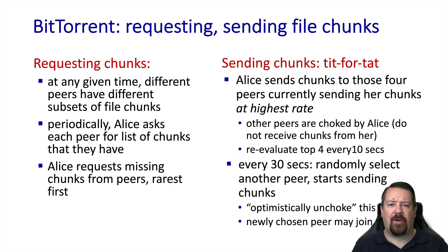The peers are selective about which peers they send chunks of the file to — they prioritize the peers that are currently sending at the highest rate. Periodically, the peer will reevaluate which of their peers are the fastest. This encourages peers to upload rapidly if they want to be able to download chunks rapidly. There is another component called Optimistic Unchoke, whereby Alice selects a random peer and sends it one of the chunks that it's requesting. This is the bootstrapping process by which peers that have no chunks can get started downloading the torrent.